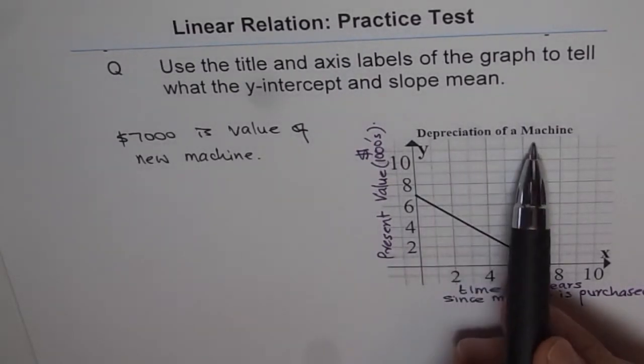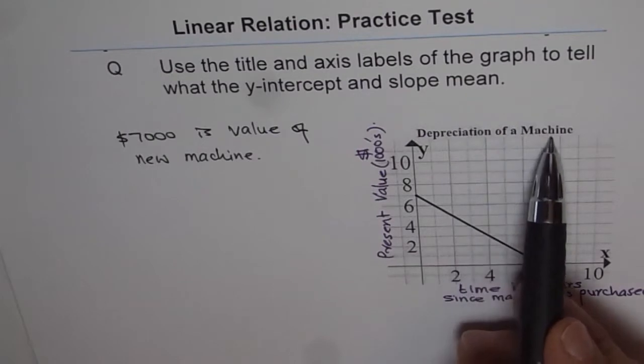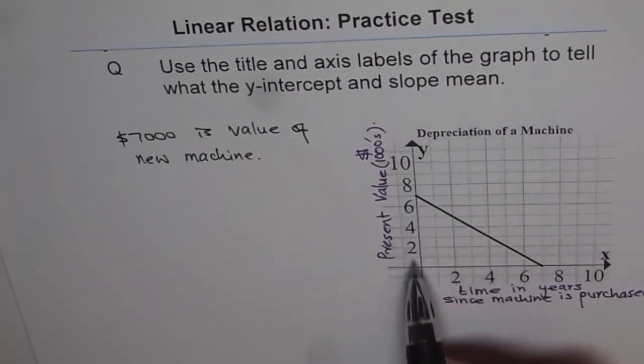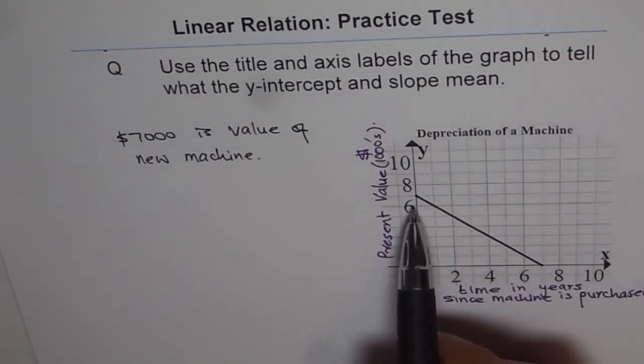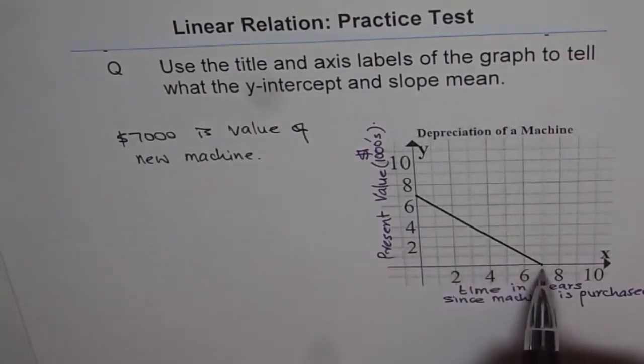So that is why the title is depreciation of a machine. Now you can calculate the slope, which seems to be, it depreciates $7,000 within a period of 7 years.